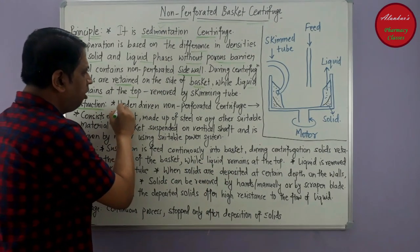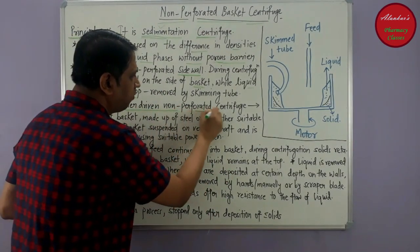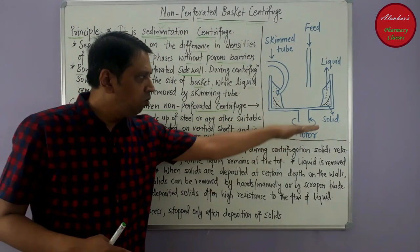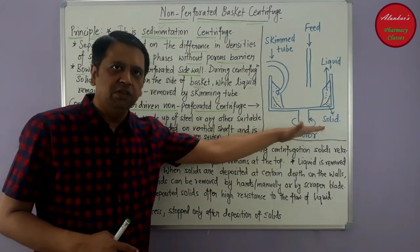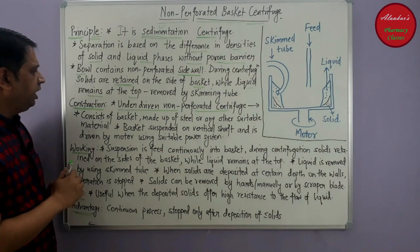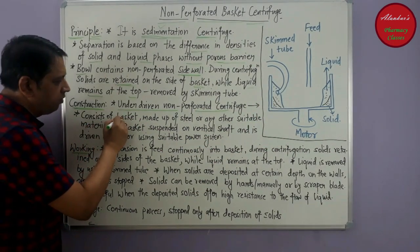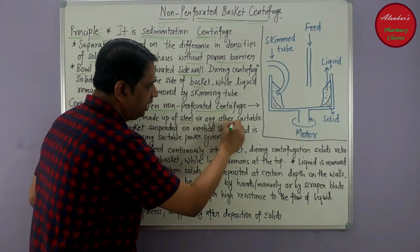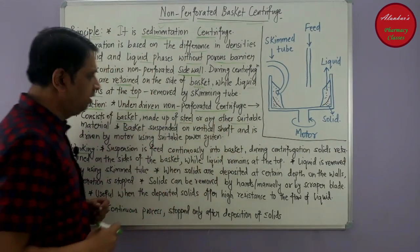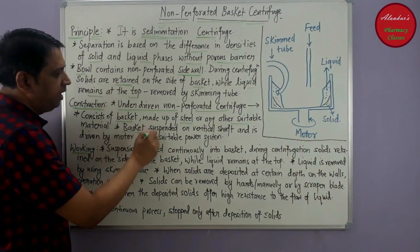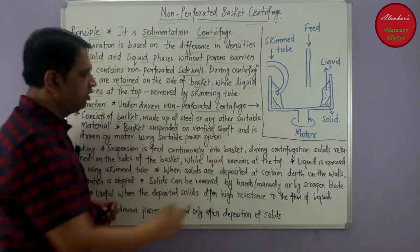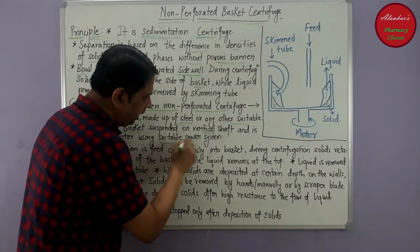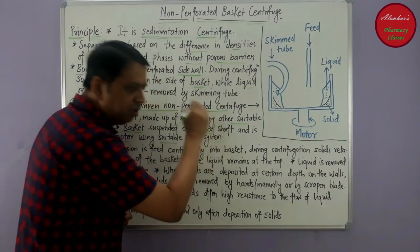This is an example of an underdriven non-perforated centrifuge, where the basket is mounted over the shaft, not below it. Regarding its construction, it consists of a basket made up of steel or any other suitable material. The basket is suspended on a vertical shaft and is driven by the motor using any suitable power system.